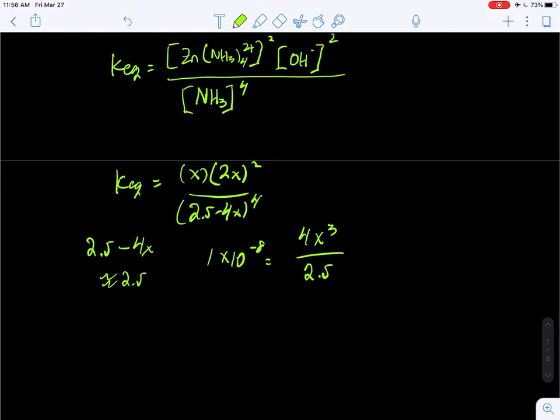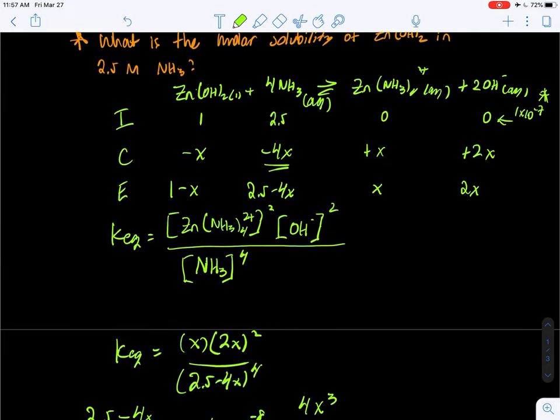This simplifies so 1×10^-8 equals 4x³ divided by just 2.5. I'm going to do the algebra and math here: 1×10^-8 times 2.5, divide by 4, then take the cube root of that, and I get a value of 0.0018.